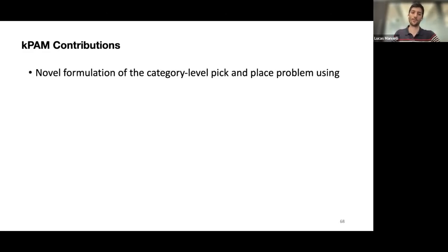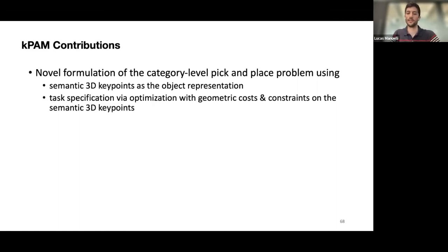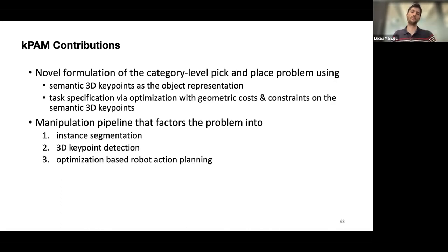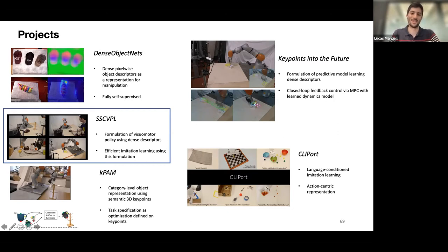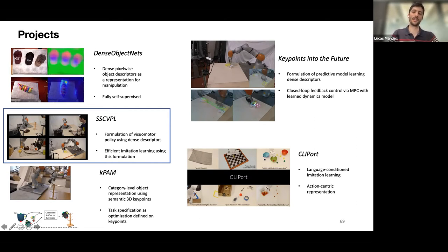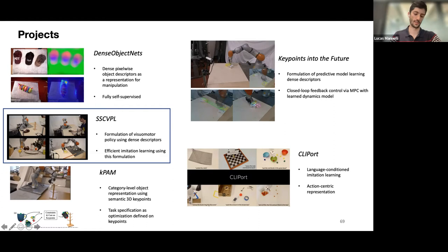To wrap up KPAM: it's a novel formulation of the category-level pick-and-place problem that uses semantic 3D keypoints as the object representation. You can specify tasks using costs and constraints on these keypoints, and it's a factorized pipeline for executing that. The next project is SSCBPL — Self-Supervised Correspondence in Visual Motor Policy Learning. In hindsight it was a bad title, which is why we have this acronym. This project and 'Keypoints into the Future' both build directly off Dense Object Nets — two different ways of using the object representation developed at the beginning.